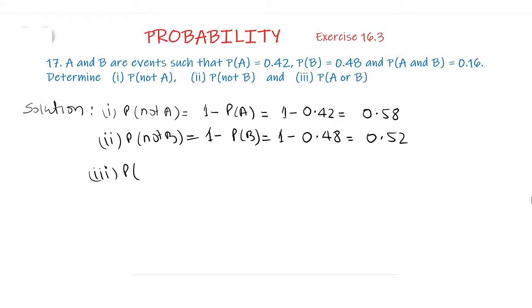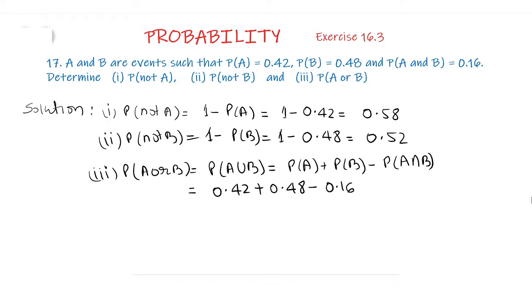Part 3 — probability of A or B equals probability of A union B, which equals probability of A plus probability of B minus probability of A intersection B. That is 0.42 plus 0.48 minus 0.16. So 0.90 minus 0.16 equals 0.74. The probability of A or B is 0.74.